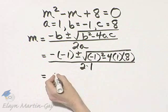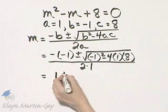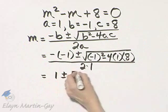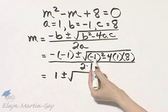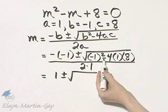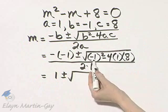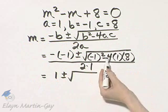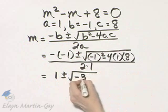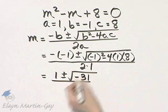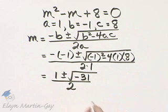Let's simplify then. The opposite of negative 1 is 1, and then this is plus or minus the square root of, this is 1 minus 32. Negative 1 quantity squared is 1. 1 minus 32, that's negative 31, all over 2 times 1, which is 2.